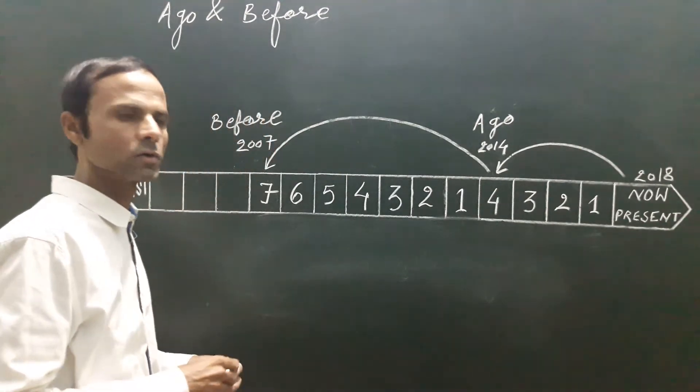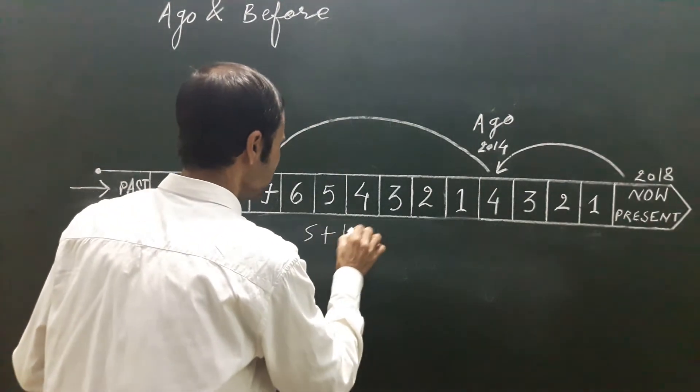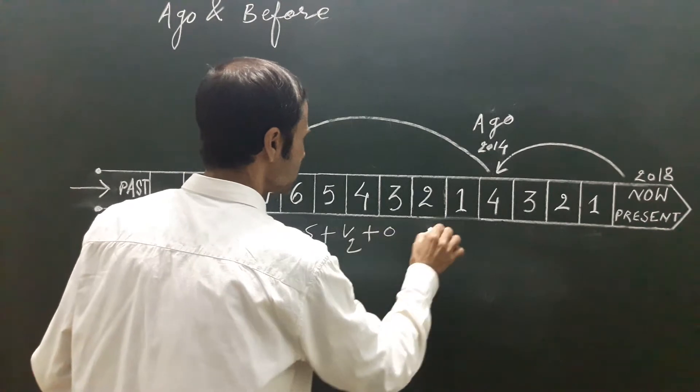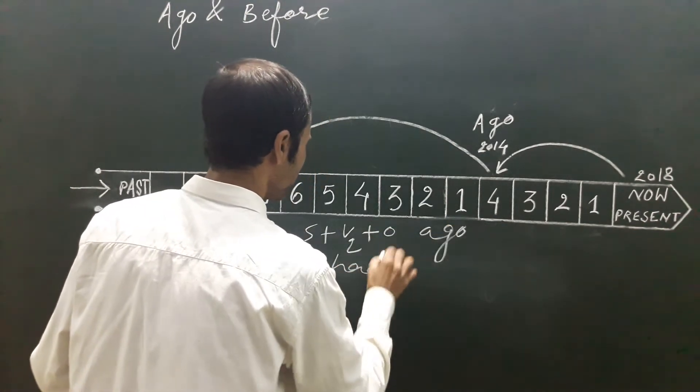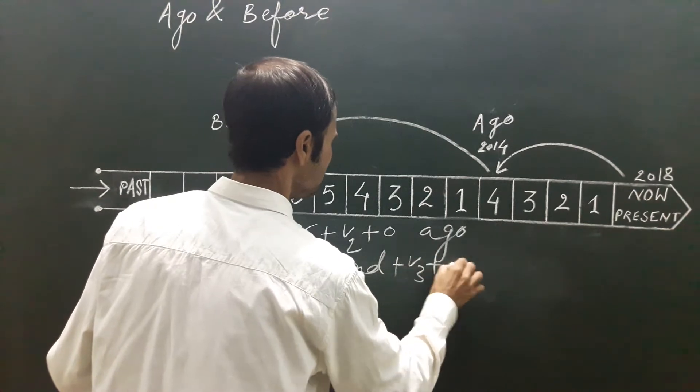So the formula goes like this. Subject, second form of the verb plus object, ago. Subject, past perfect tense had plus past participle, before.